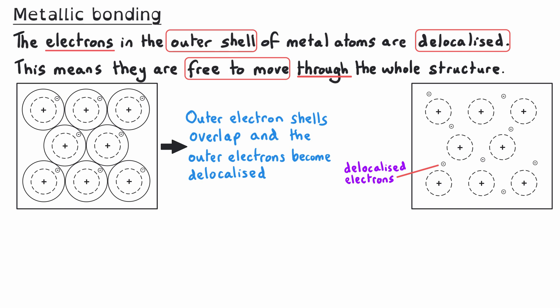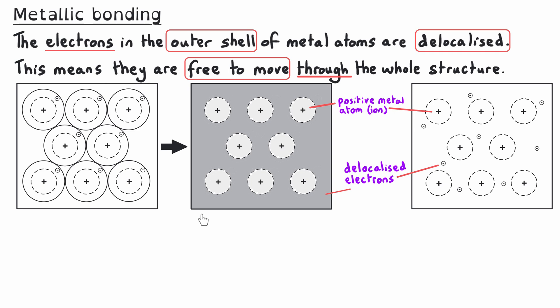The metal atoms have lost a negative electron, so technically they are now positively charged ions. These delocalized electrons are free to move through the structure and could be anywhere in the metal. An alternative way of showing the metal structure is shown in the middle diagram, where you can still see the positive metal ions, and the area where the delocalized electrons could be is grayed out — because we don't actually know at any one time where those electrons will be. You need to be able to recognize both diagram types.